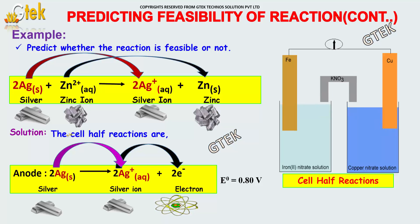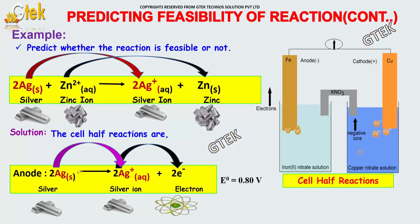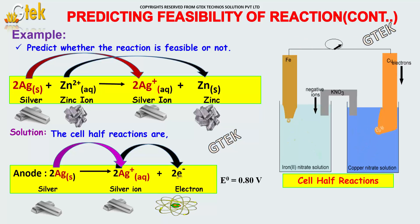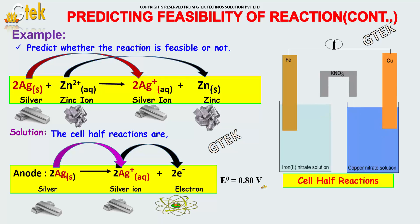The half-cell reaction on one side is: 2Ag gives 2Ag⁺ ion plus 2e⁻ (electrons). Here we can represent E0 equal to 0.80 volt.